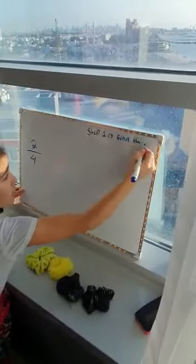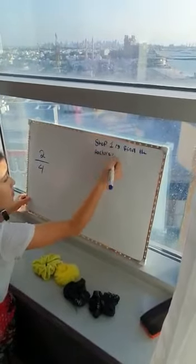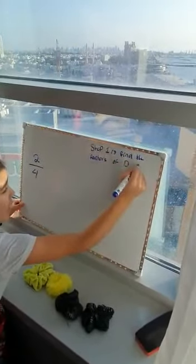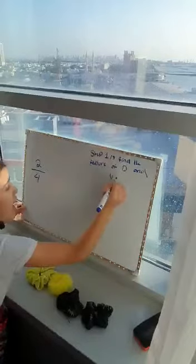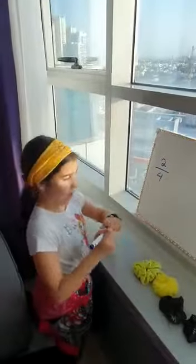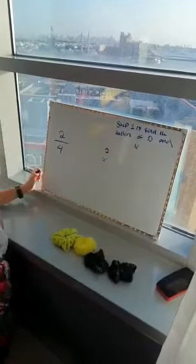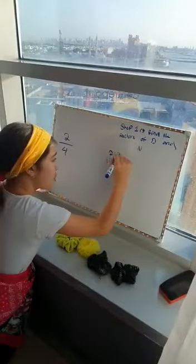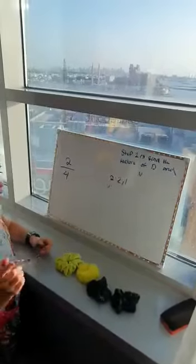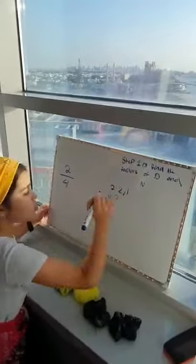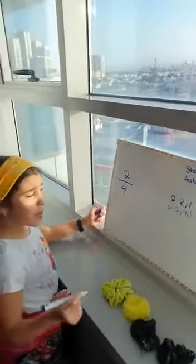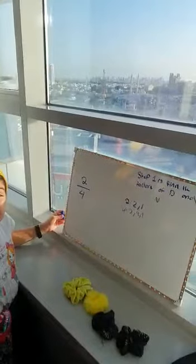Step one is to find the factors of D and N — D means the denominator and N means the numerator. Now we are going to find the factors of two and four. For two: two times one. For four: two times two, and four times one. These are the factors.